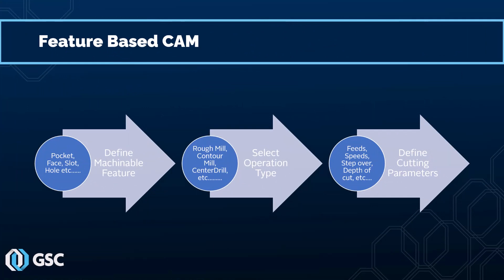Let's take a look at a typical workflow in SOLIDWORKS CAM. Since it is a feature-based CAM software, the first thing we have to do is define a machinable feature — essentially what we want to machine — such as a pocket, a slot, a hole, and so on. After that, we define how we wish to machine that feature by selecting an operation type, such as rough mill, contour mill, center drill, and so on. Then we can go in and define the specific cutting parameters such as feed, speeds, step over, depth of cut, and so on.